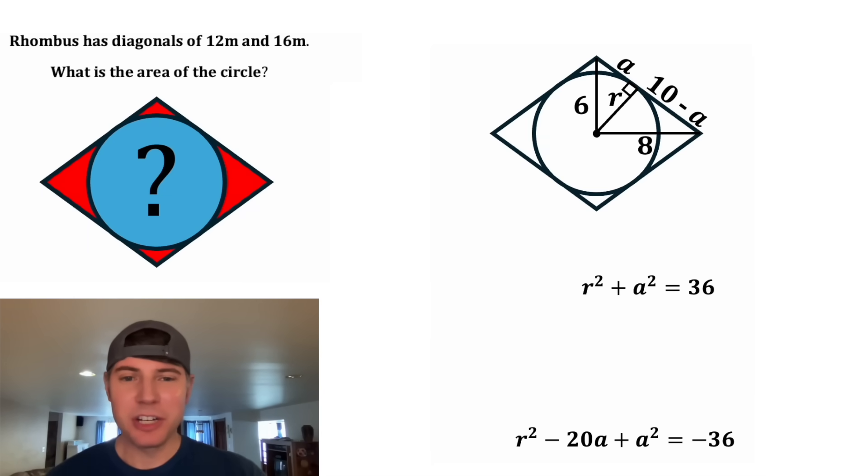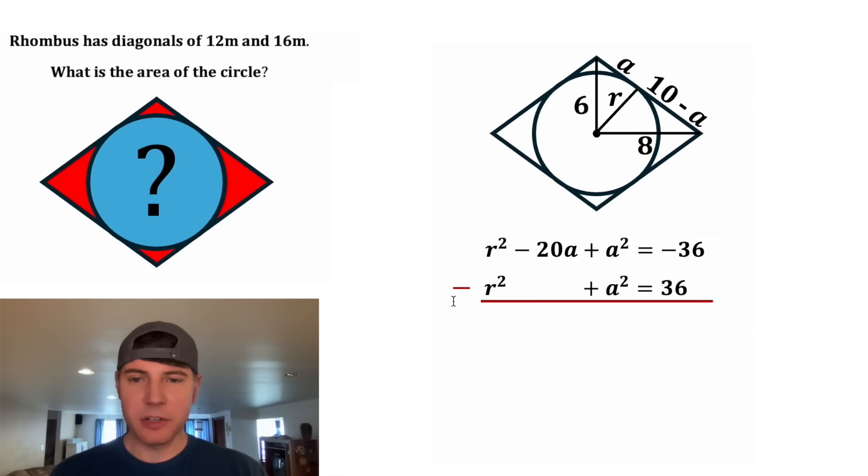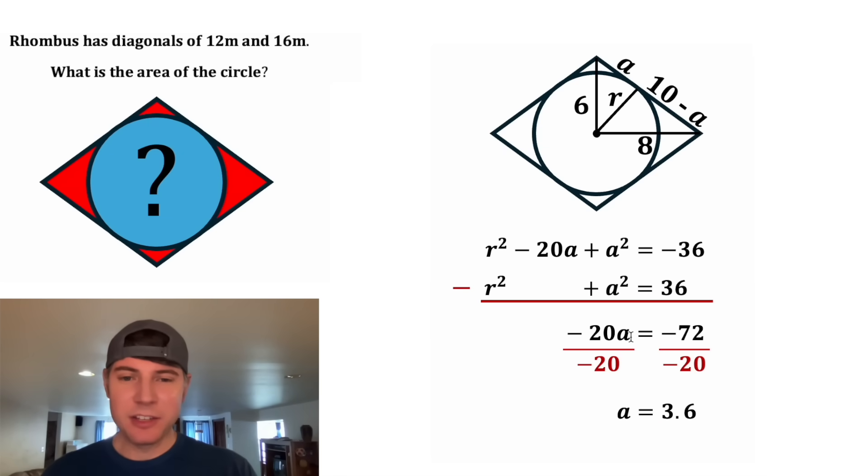Now we've cleaned up our two equations, and let's rearrange them like this. Let's drag the R squared over here, and I want to subtract this row minus this row. This R squared minus R squared are going to cancel each other out. Negative 20A minus nothing is negative 20A. And then positive A squared minus positive A squared are also going to cancel each other out. And then on the right-hand side, we have negative 36 minus 36, which will give us negative 72. Now to get the A by itself, we can divide both sides of the equation by negative 20. And this will give us A is equal to 3.6.